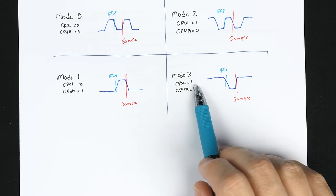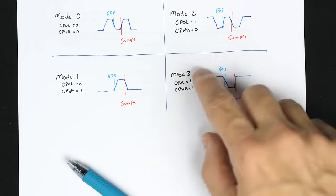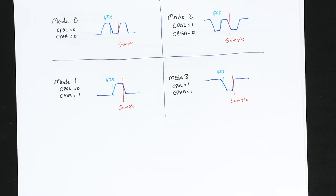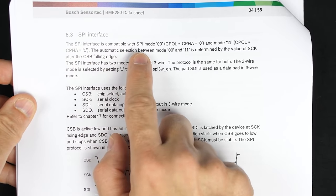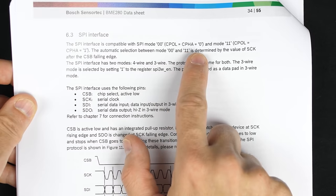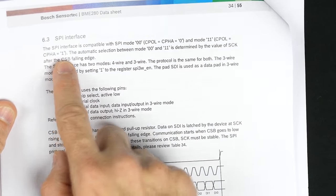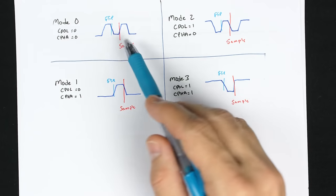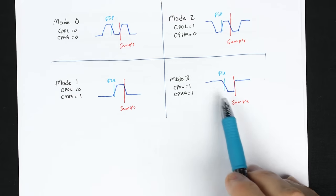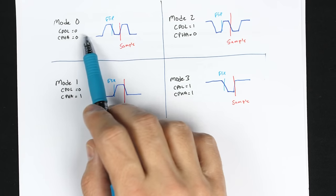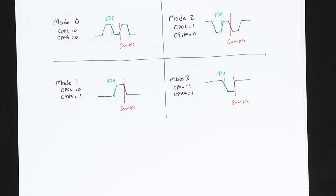Which mode is used is defined by both the polarity of the clock — whether it starts high or low — and the phase — whether we sample on the rising or falling edge. To know which to use, you have to look at the datasheet for the particular device. For this temperature sensor, the datasheet says it's compatible with SPI mode 0 (polarity and phase both zero) and mode 3 (polarity and phase both one). Effectively it samples on the rising edge in both cases, meaning it doesn't really care whether the clock idles high or low — just check your datasheet.